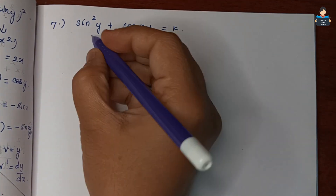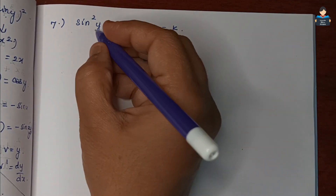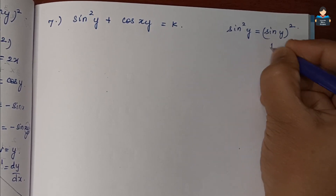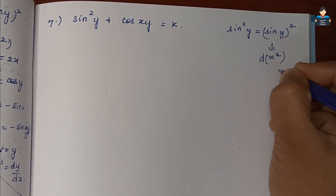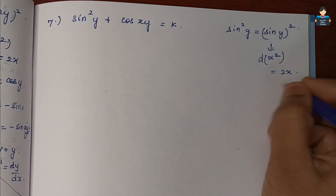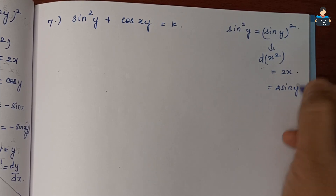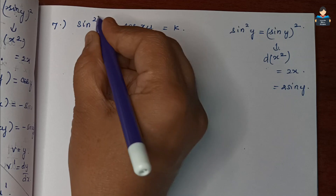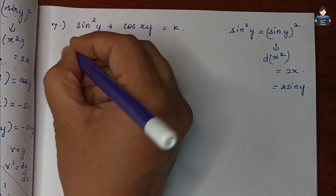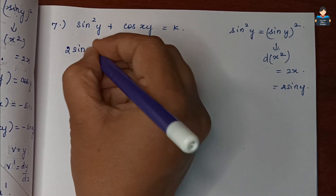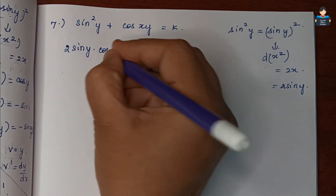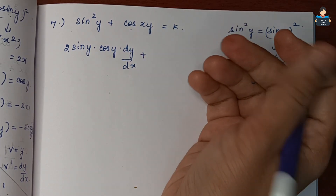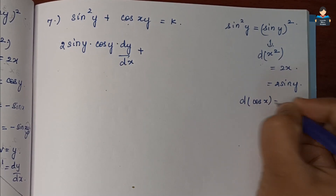Now question number 7: sin²y + cos(xy) = k. We differentiate with respect to x. sin²y is of the form x²; differentiating gives 2 sin y, and differentiating sin y with respect to x gives cos y · dy/dx.